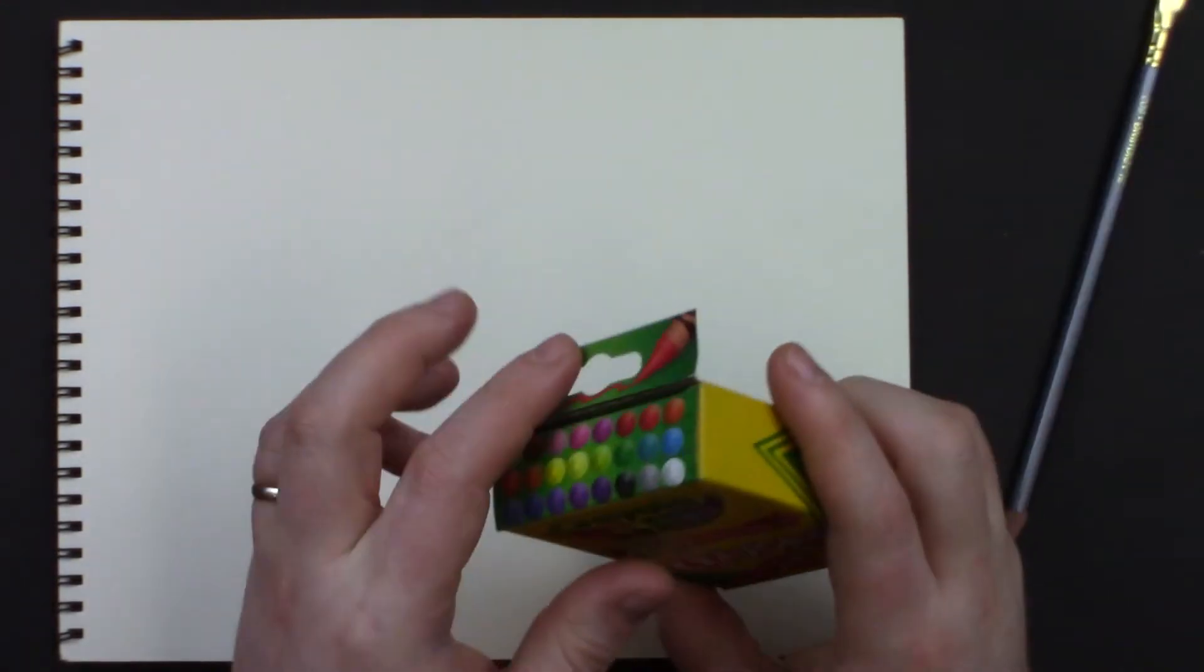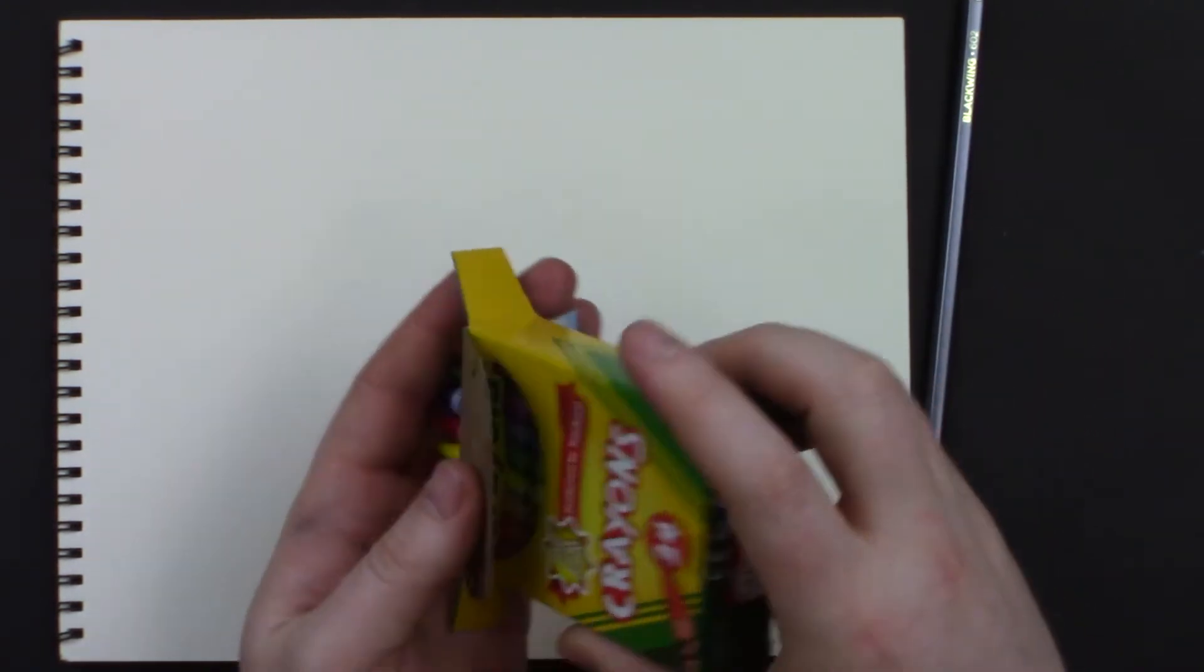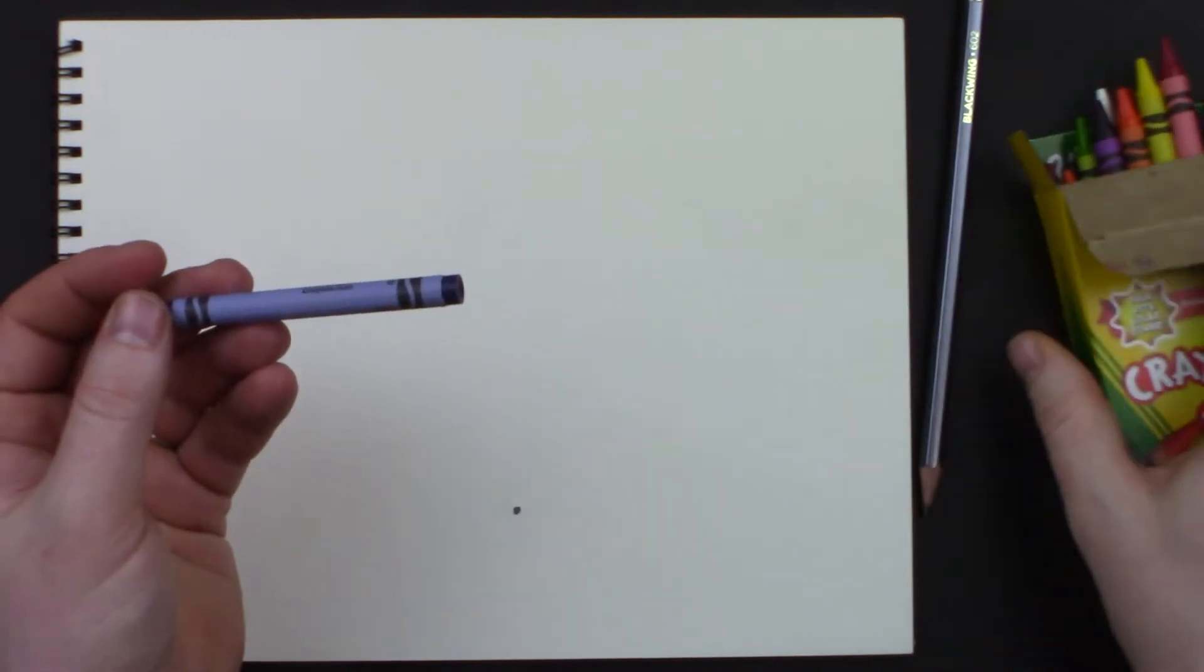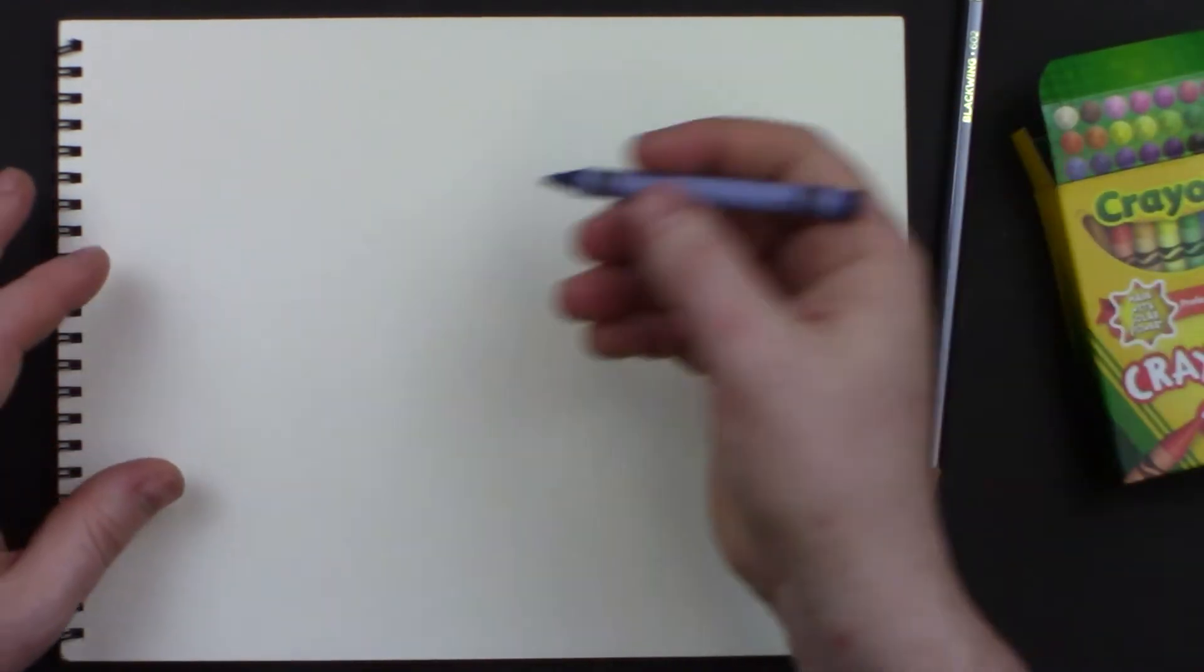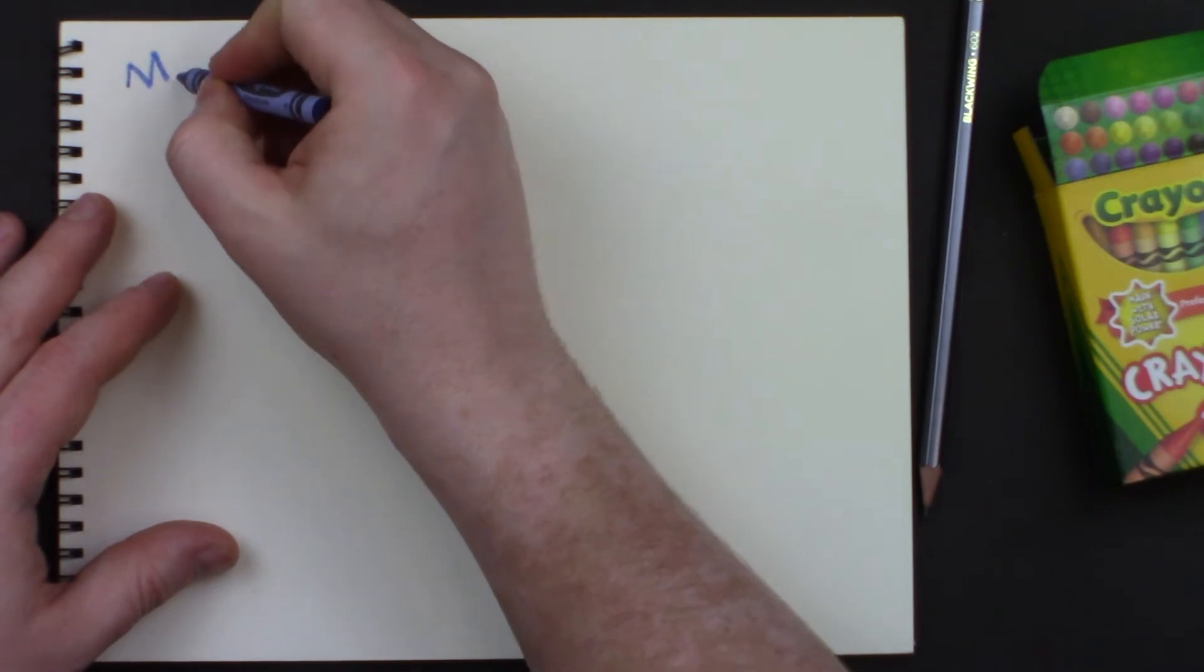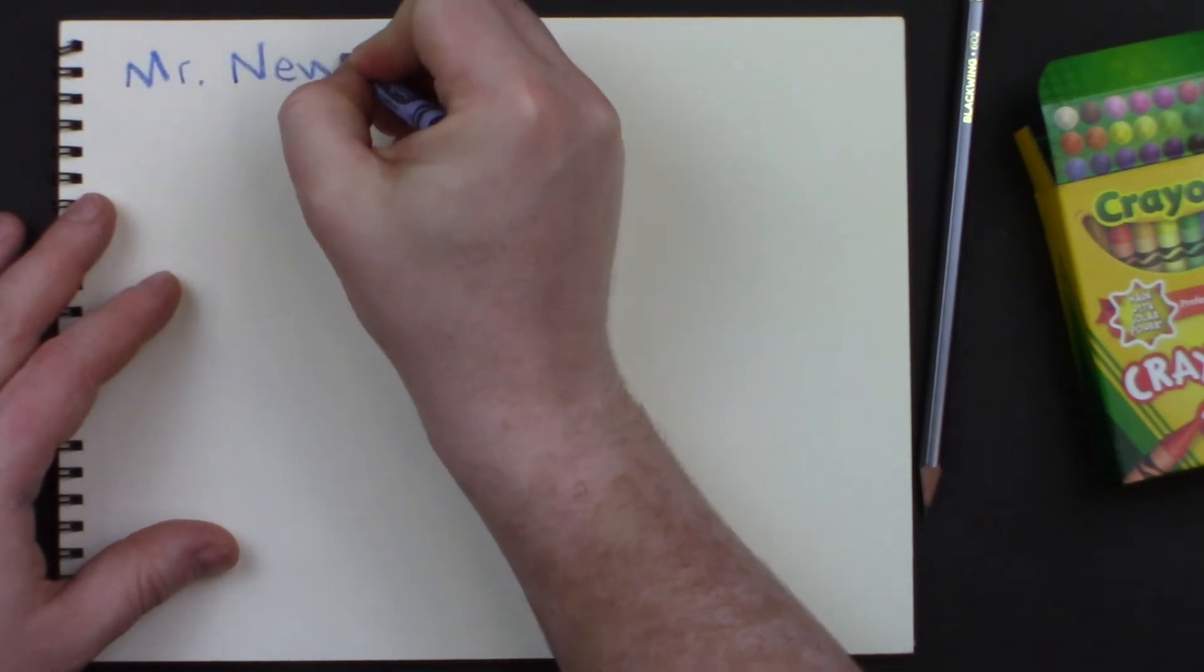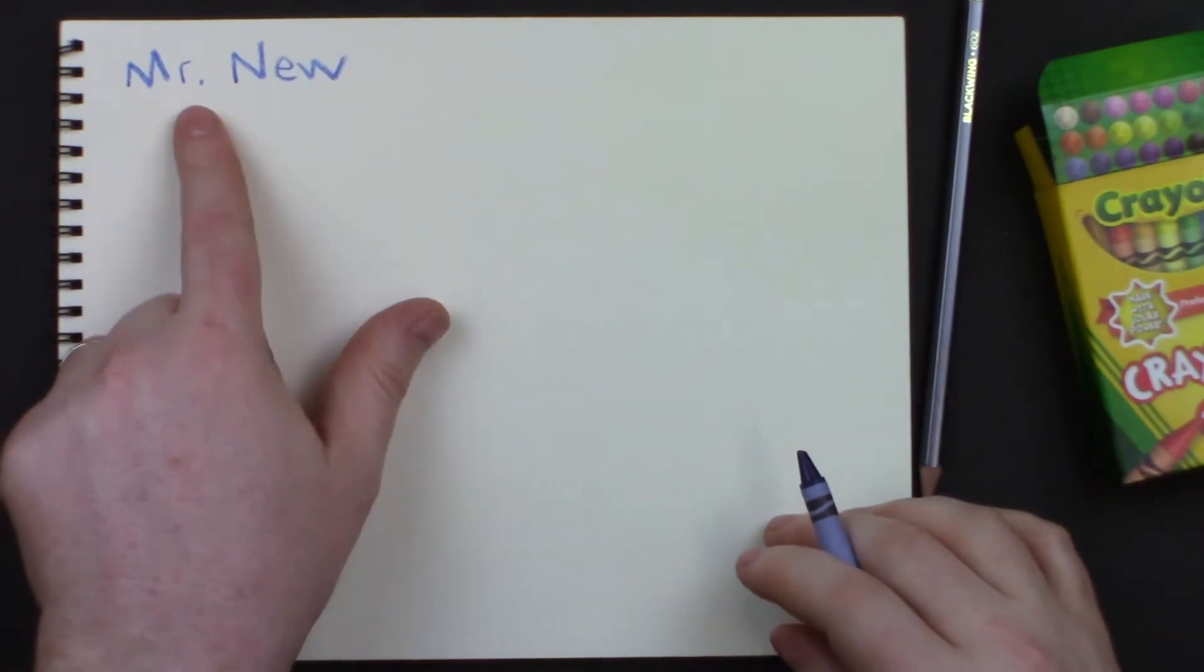This lesson is going to focus on the simplest elements of art. We're going to practice making lines and shapes. So go ahead and grab some drawing supplies and follow along with me. For starters, we want to write our name. Now you could use a pencil or a crayon or whatever you have. I'm going to write my name up at the top. Mr. New.